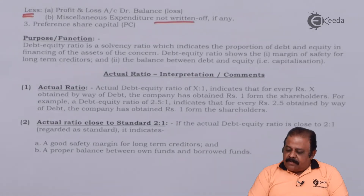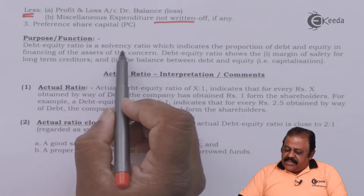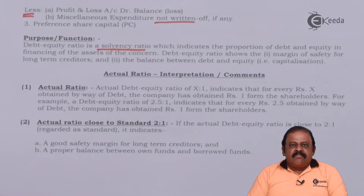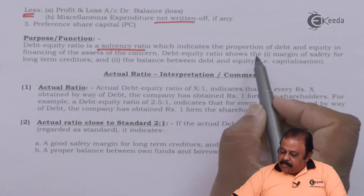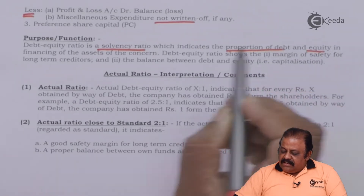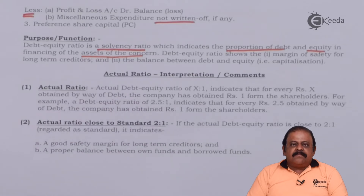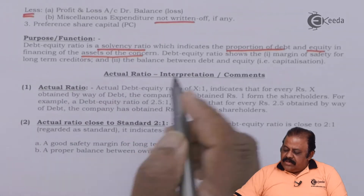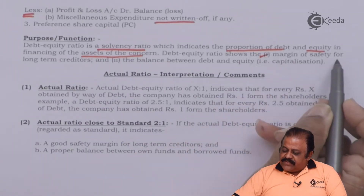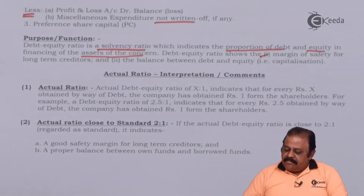Purpose and function: debt equity ratio is a solvency ratio which indicates the proportion of debt and equity in financing the assets of the concern. It shows the margin of safety for long-term creditors and the balance between debt and equity, that is the capitalization.